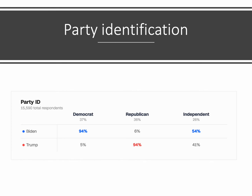Now let's look at some of these differences from the last presidential election using exit polling. When people vote, the ballots are anonymous, but TV networks use exit polling — in this case with about 16,000 respondents for many questions. They ask people coming out who they voted for and their party ID. The obvious result: 94% of Democrats voted for Biden, 94% of Republicans voted for Trump. But note that Biden did better with independents by a 13-point advantage, which made a huge difference.